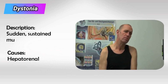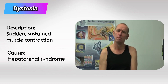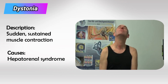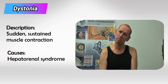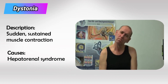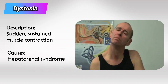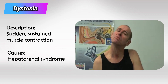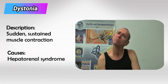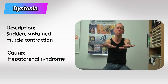Next we have dystonia, which is a sudden contraction of any muscle and sustaining of that contraction. This commonly presents in the hand as writer's hand, or in the eyelids with constantly closed or open eyes.